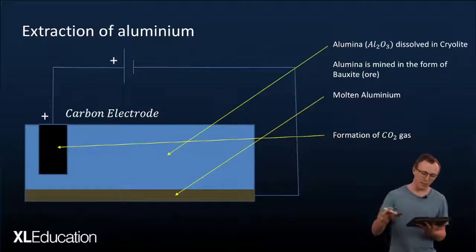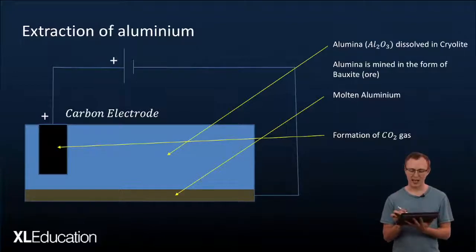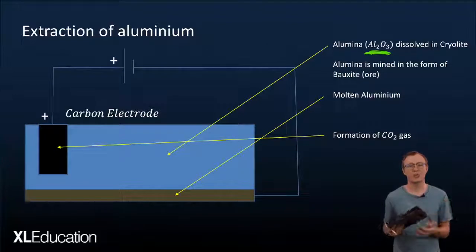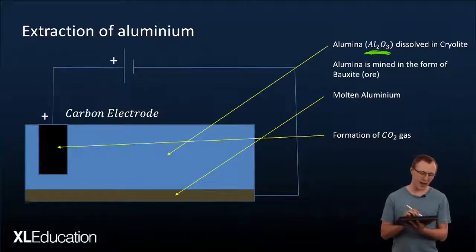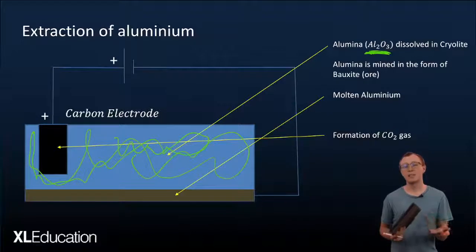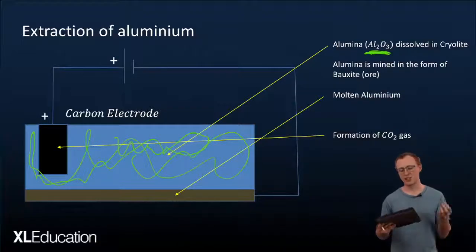So from the bauxite we get alumina which is aluminium oxide. And that aluminium oxide we dissolve in a substance called cryolite and that is the electrolyte we use in our cell.